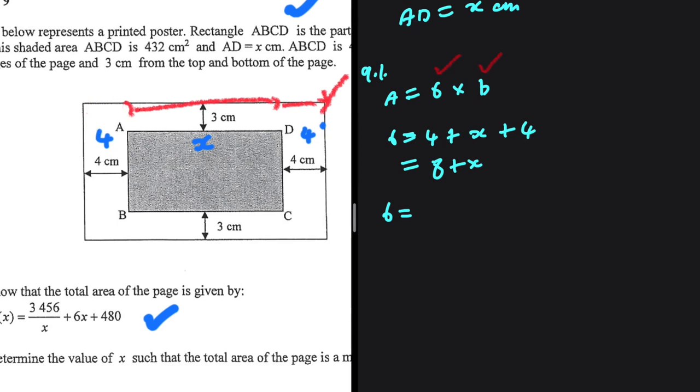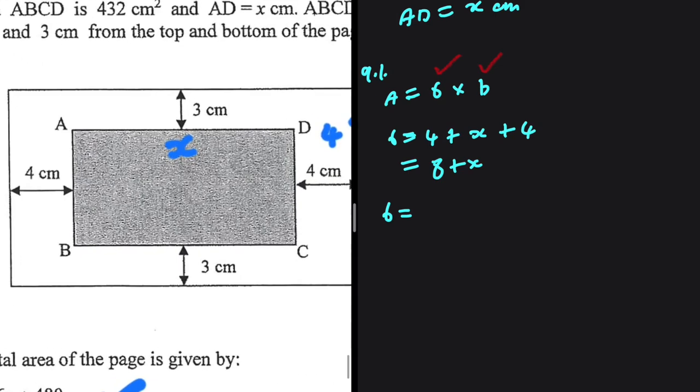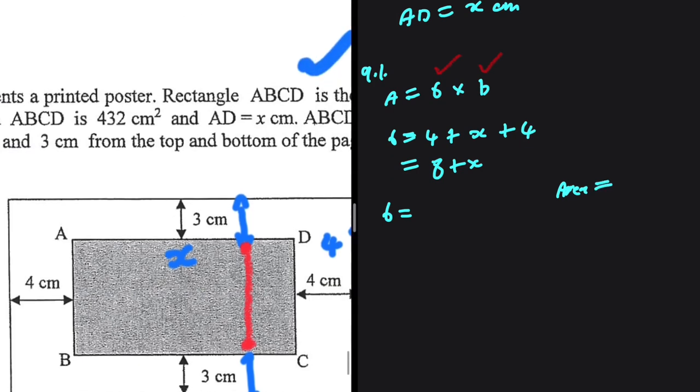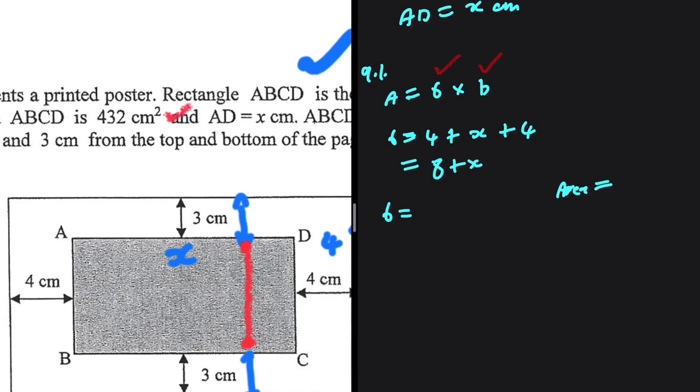Let me just erase this first and see what we have. From here to here we have 3 cm obviously and then from here to here we have 3 cm. We just need the length from this point up to here. How can we do that? We have the area of the shaded area. It is said to be 432 cm.